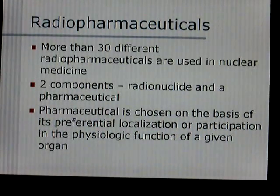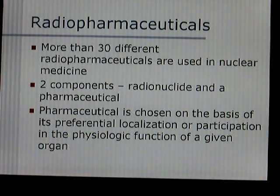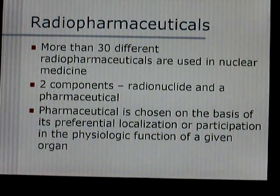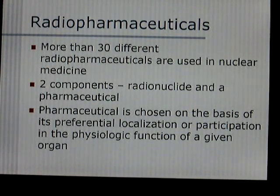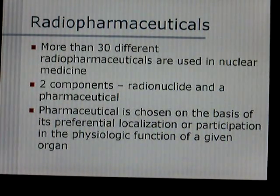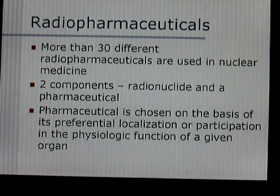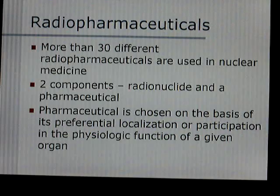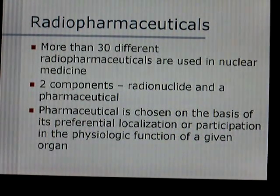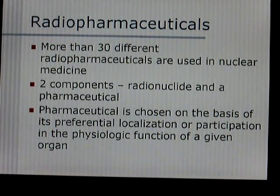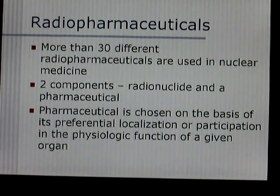There are more than 30 different radiopharmaceuticals used in nuclear medicine, with more being developed. The two components of a radiopharmaceutical are the radionuclide and the pharmaceutical. The pharmaceutical is chosen based on its preferential localization and participation in the physiological function of a given organ — it's tagged to a radionuclide, seeks out that particular organ when introduced into the body, and then the radionuclide emits radiation from that organ so you can view it.